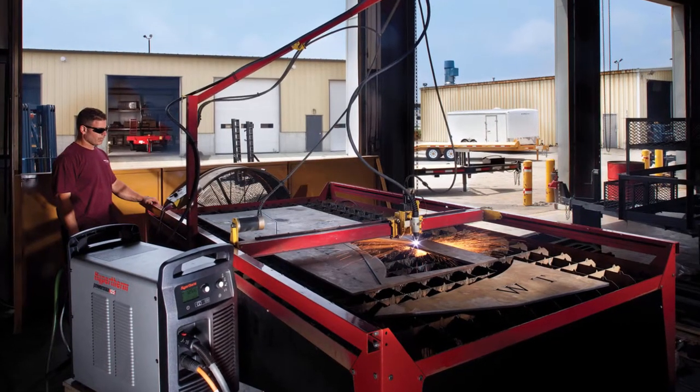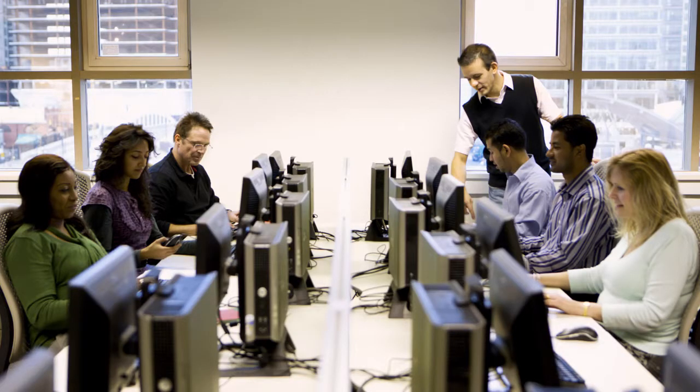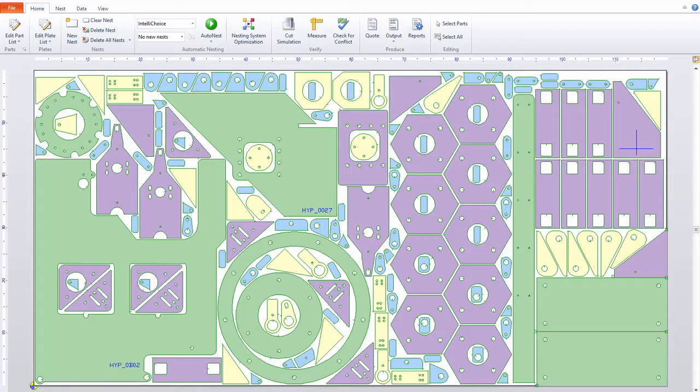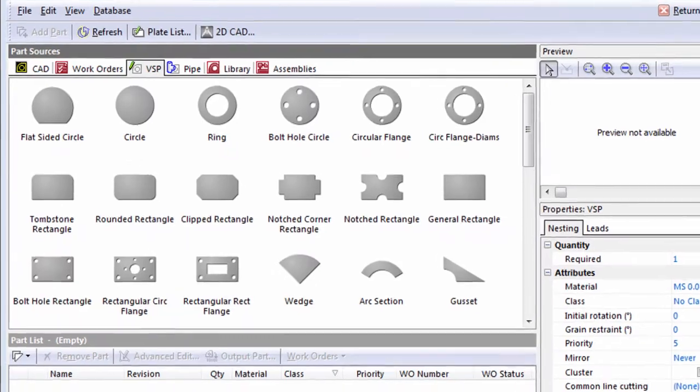Also offering ProNest LT feature sets for light industrial cutting. ProNest is easy to learn with an intuitive interface. 2D CAD is also included, and a variable shape part library.